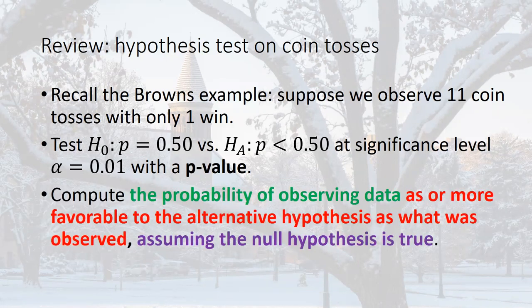We need to compute the probability of observing data as or more favorable to the alternative hypothesis as what was observed, assuming the null hypothesis is true. I've color-coded the definition — the green, red, and purple parts — and we're going to break these down one at a time and address all three parts of the p-value definition.